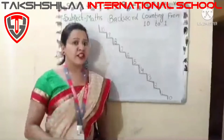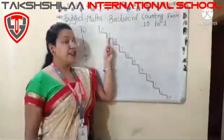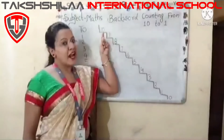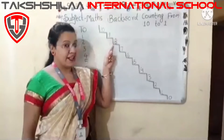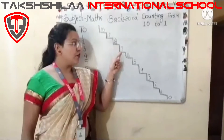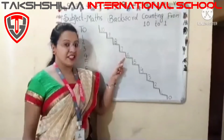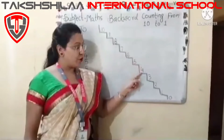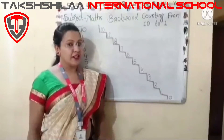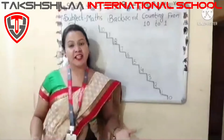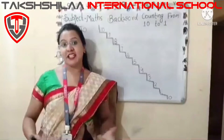Now, kids, I want to go back down. Start from 10 — go back: 9, 8, then move back: 7, go back: 6, 5, 4, 3, 2, 1, 0. When I come back from 10 to 1, that is backward counting.